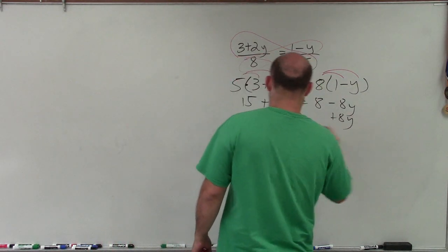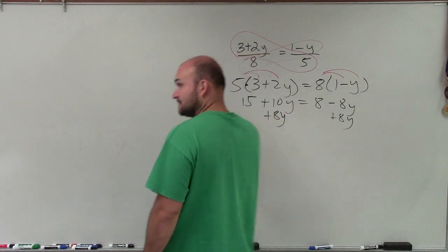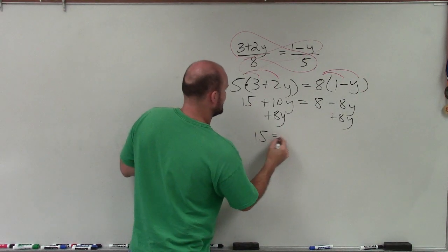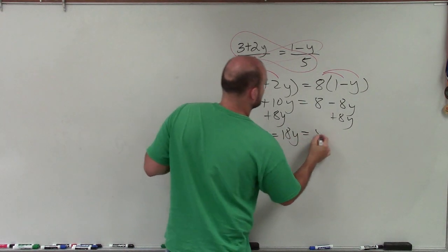So to do that, I'll add 8y onto both sides. So now I've added 8y to both sides. So I have 15 plus 18y equals 8.